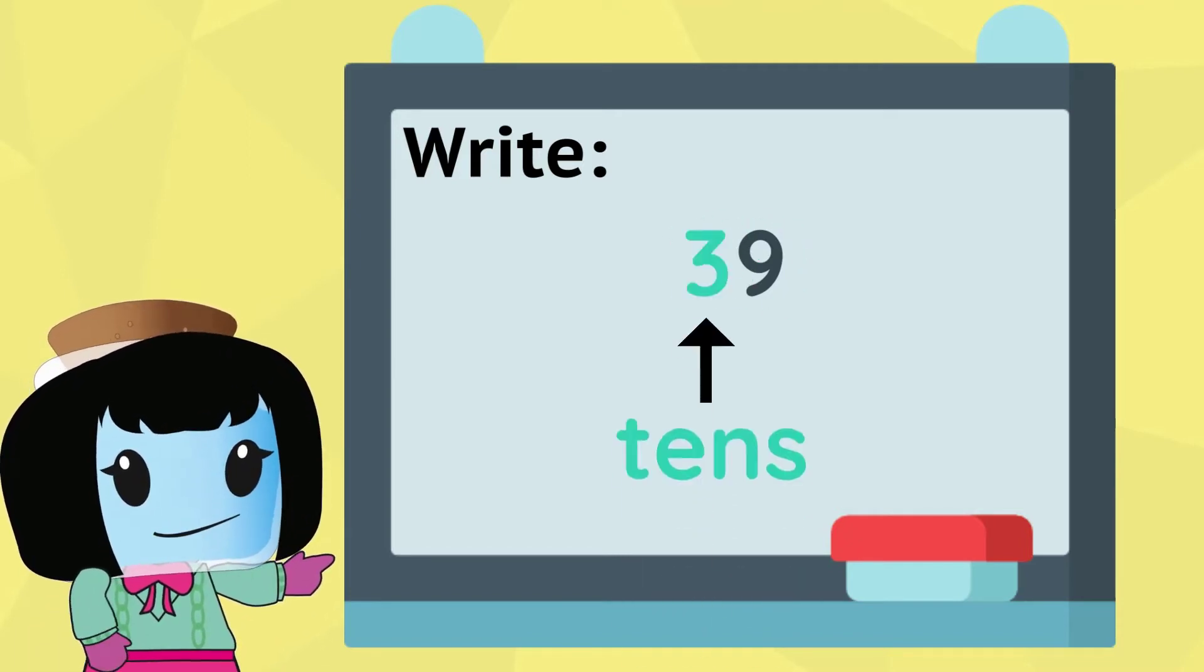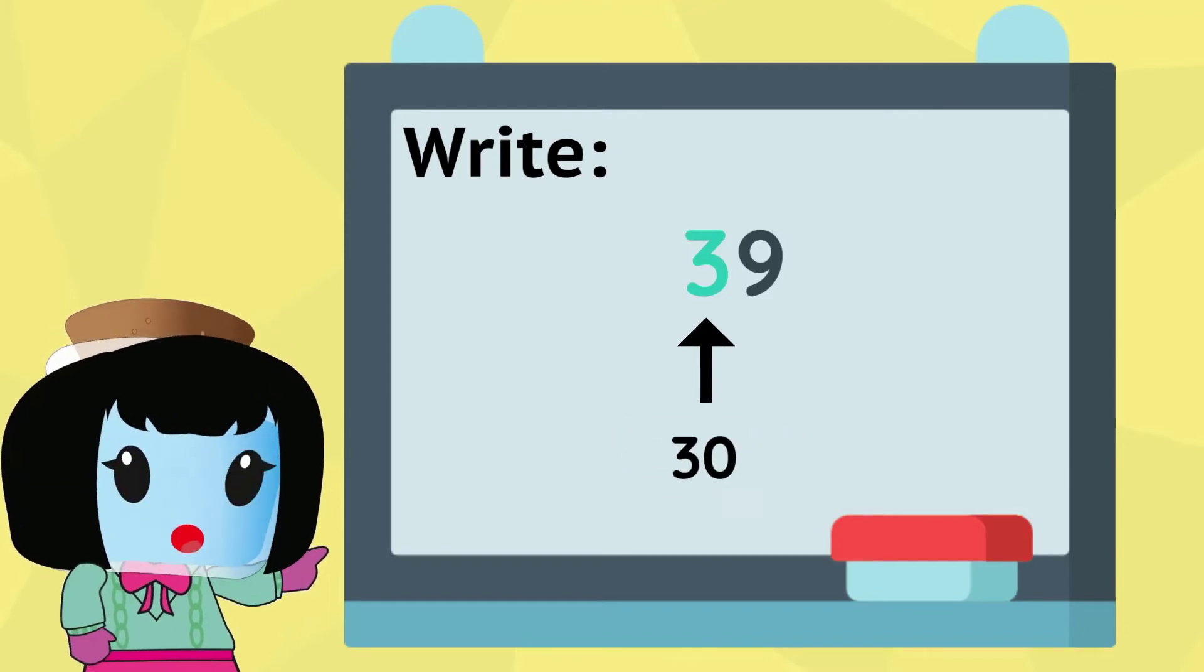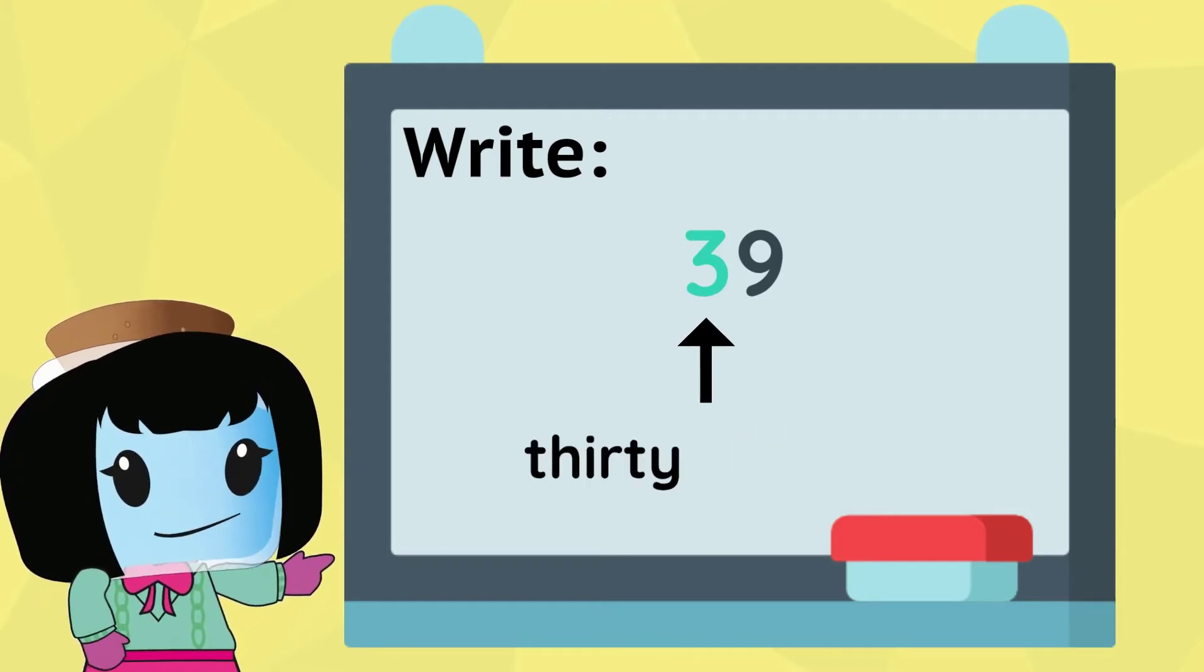Three is in the tens place, so this is actually 30. Write this as 30.